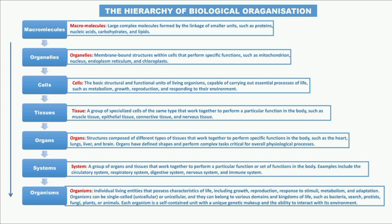Organs have a defined shape and perform complex functions critical for overall physiological processes. A system is a group of organs and tissues that work together to perform a particular function or set of functions in the body — examples include the circulatory system, respiratory system, and digestive system. Organisms are individual living things possessing characteristics of life including growth, reproduction, response to stimuli, and metabolism.